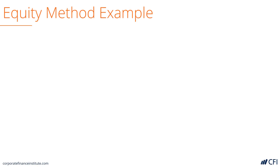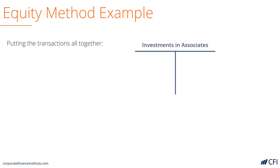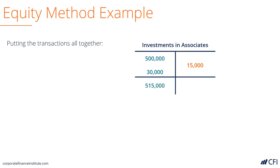Let's see how it all fits together. Here's our T-table. Investment in associates: initially $500,000 is the original investment, less a $15,000 dividend, plus $30,000 of net income. So the closing balance is $515,000 at the end of the period.